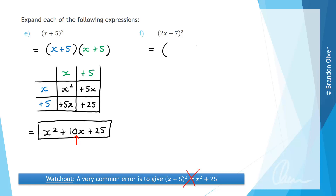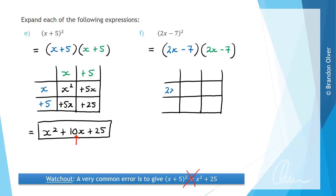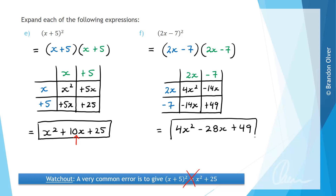For part f, remembering that squaring means multiplying by itself, we set up 2x minus 7 multiplied by 2x minus 7. Setting up the grid with 2x minus 7 on both the side and the top, we multiply through: 2x times 2x is 4x squared, negative 7 times 2x gives minus 14x, 2x times negative 7 gives minus 14x, and negative 7 times negative 7 gives positive 49. Collecting like terms, the two lots of negative 14x combine to give negative 28x, so the answer to part f is 4x squared minus 28x plus 49.